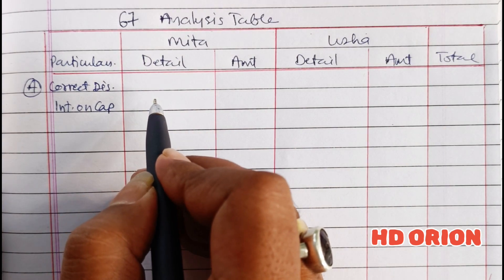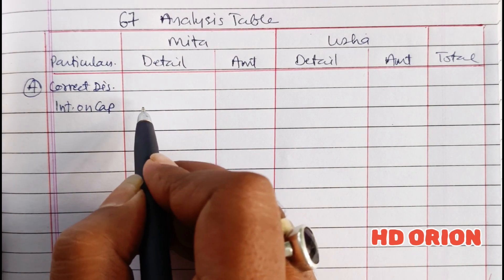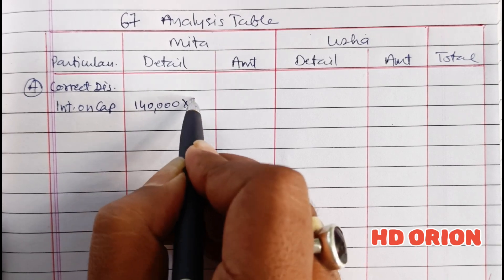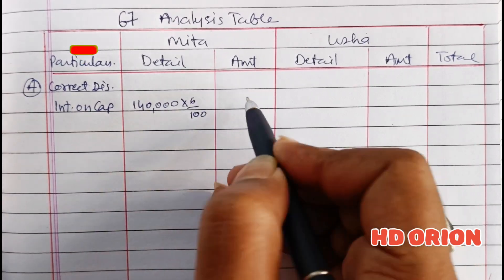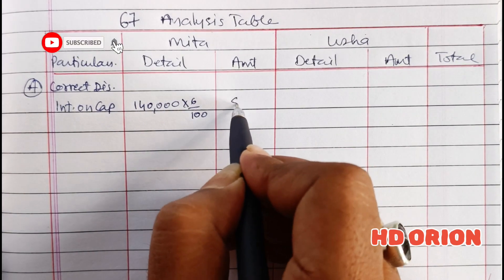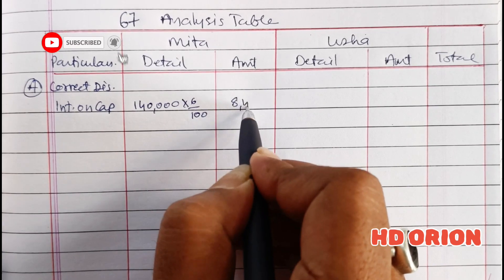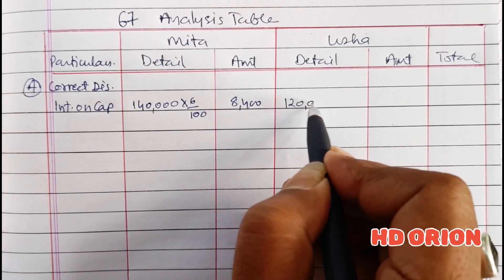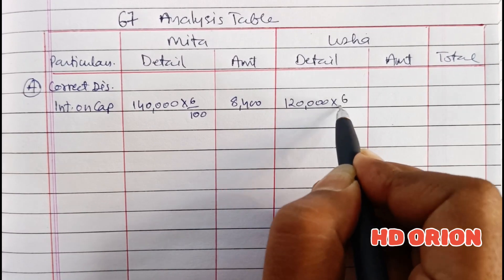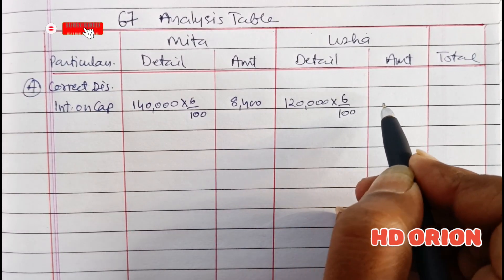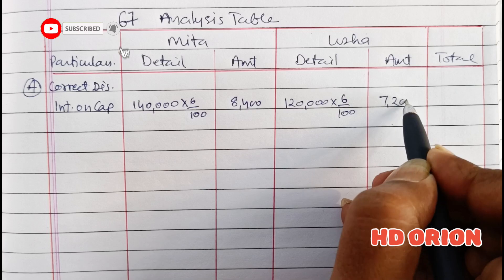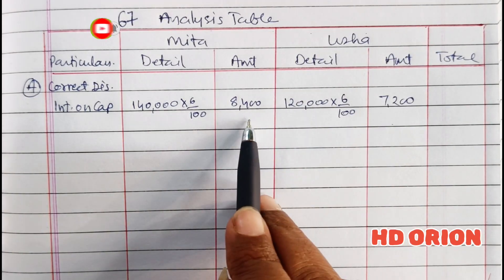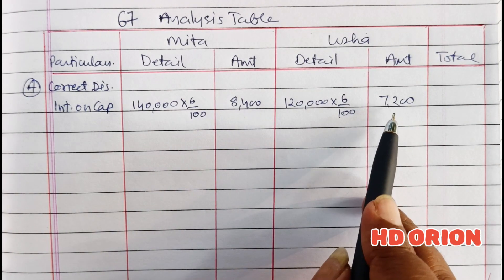Mita's capital is Rs. 1,40,000. On this, 6% interest was allowed, and that amount is Rs. 8,400. For Usha, her capital is Rs. 1,20,000. On this, again 6% was allowed, and it is Rs. 7,200. So this was the interest which was to be allowed to the partners.